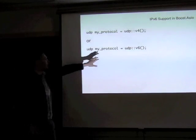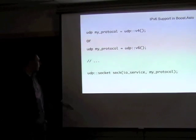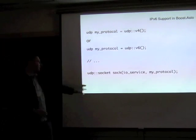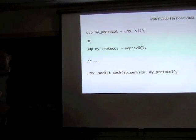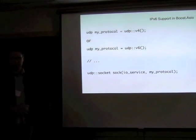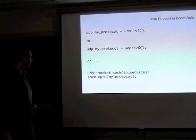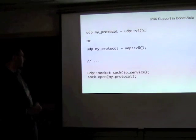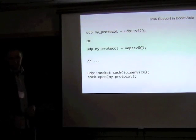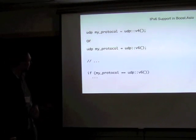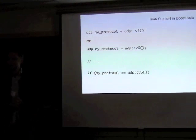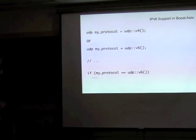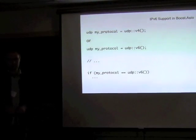Once you've made that assignment of a protocol value, you can use it when you create a socket without needing to know which variant you're using. This is just an alternative syntax for initializing the socket at the point of construction. If you do need to write protocol-specific code, you can compare protocol values to test for v4 or v6.